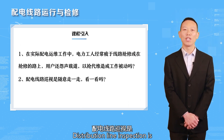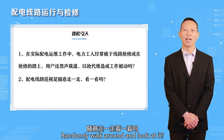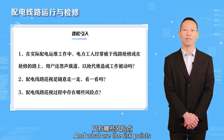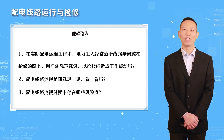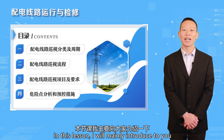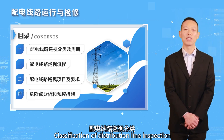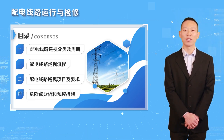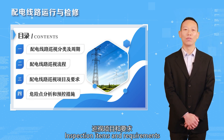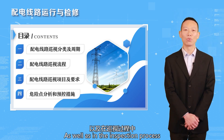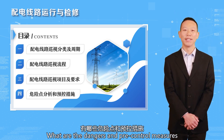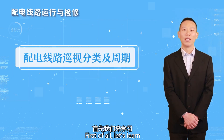Distribution line inspection is not just randomly walking around and looking at it. There is a defined inspection process and risk points to be aware of. In this lesson, I will mainly introduce the classification of distribution line inspection, inspection cycle, inspection process, inspection items and requirements, as well as the dangers and pre-control measures during the inspection process.